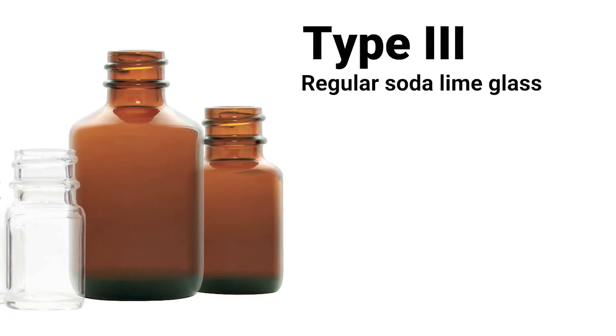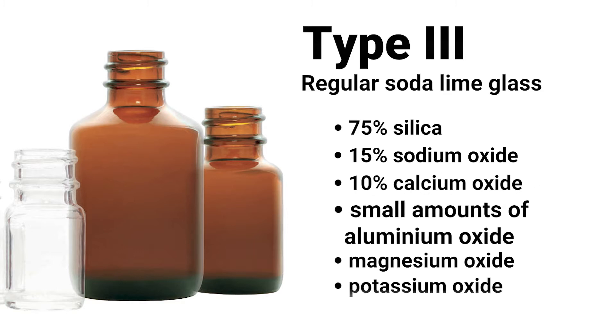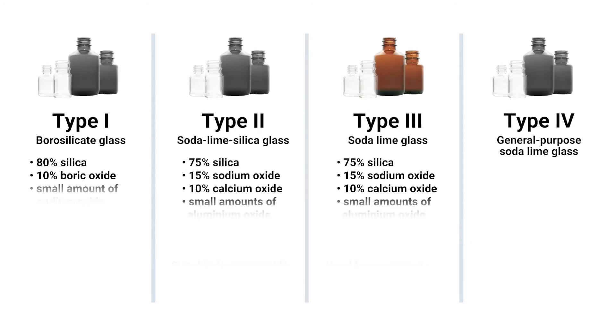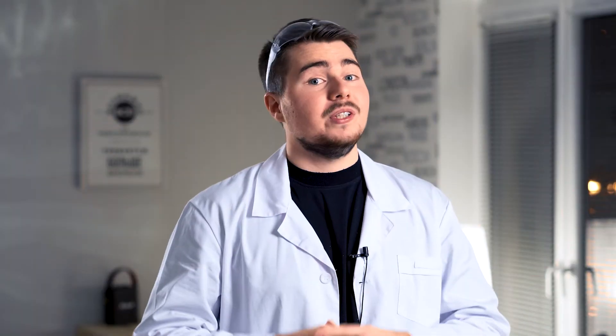Type 3 glass containers — regular soda-lime glass — has average chemical resistance. It contains 75% silica, 15% sodium oxide, 10% calcium oxide, and small amounts of aluminium oxide, magnesium oxide and potassium oxide. Aluminium oxide imparts chemical durability while magnesium oxide reduces the temperature required during molding. They are used as packaging material for parenteral products or powders for parenteral use, only where suitable stability test data indicates that type 3 glass is satisfactory, and also for non-parenteral preparations.